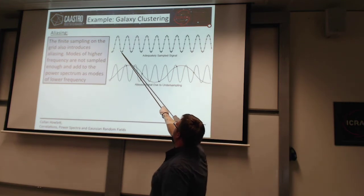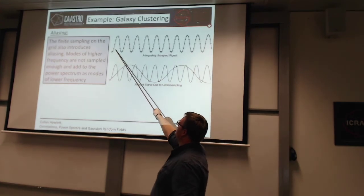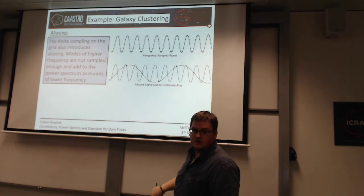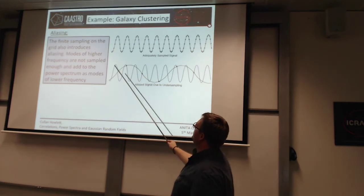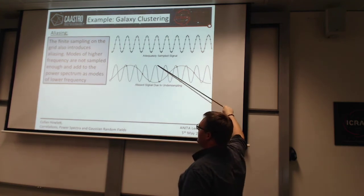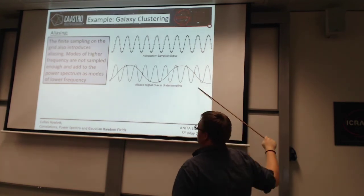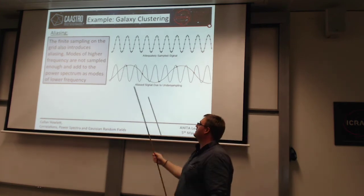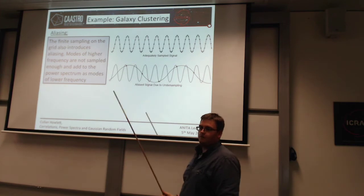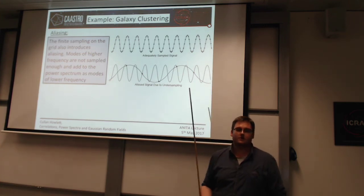Here's an illustration: this is a very high frequency signal in the observable. The points are where I've sampled it — effectively the grid spacing. With more than enough points, the signal is well sampled. But if my sampling frequency — the Nyquist frequency — is too low, I have nowhere near enough points to reconstruct the high frequency signal, and it ends up looking like a much lower frequency wave. So any high frequency signal in my data that I put on a coarse grid will end up looking like lower frequency signal.